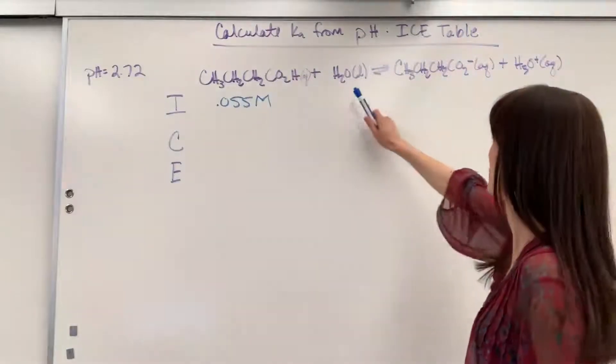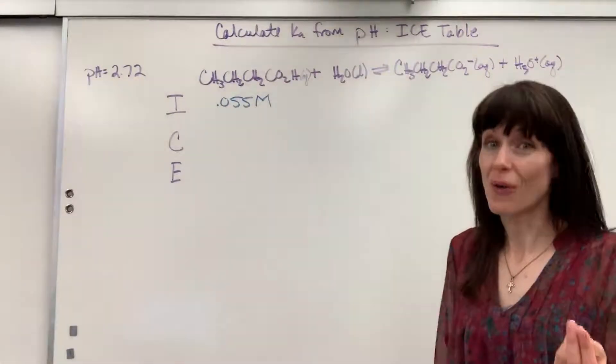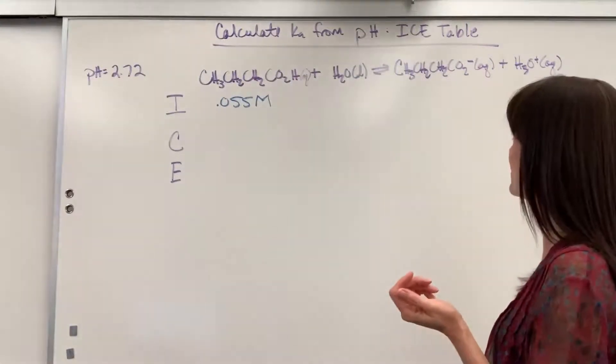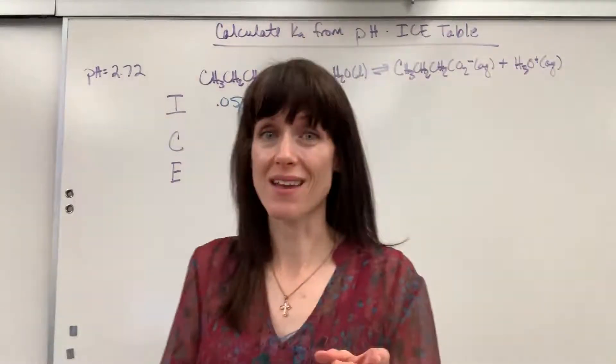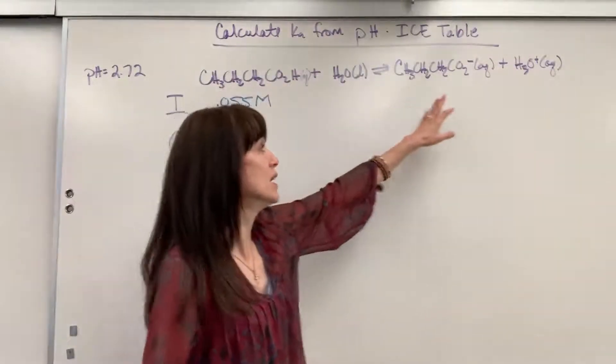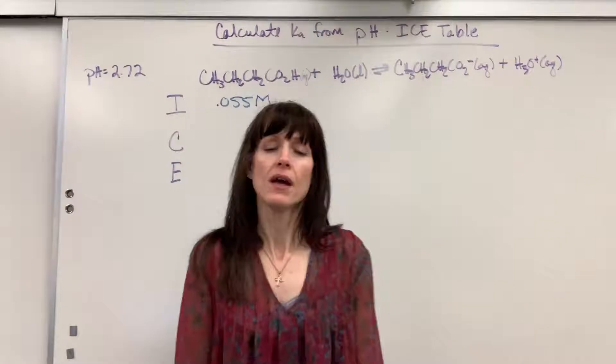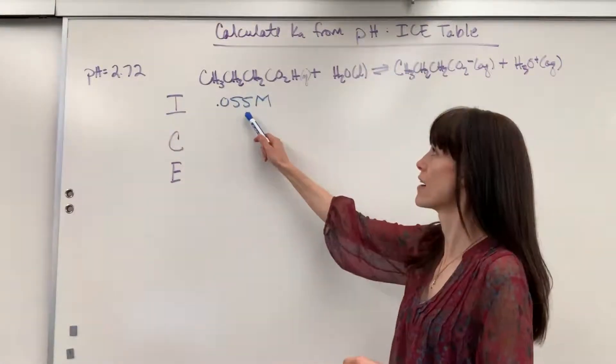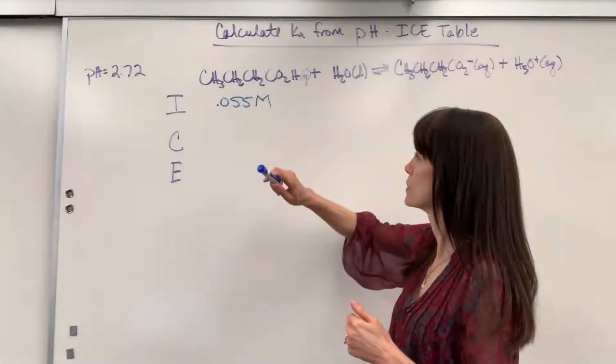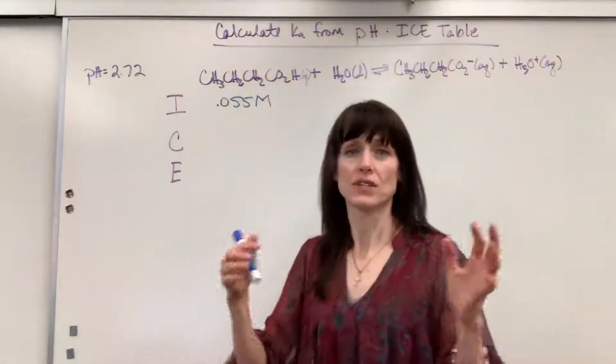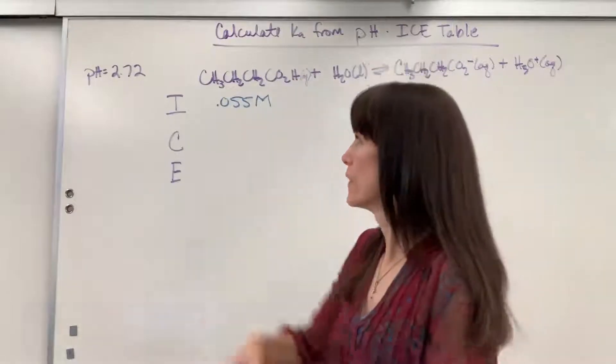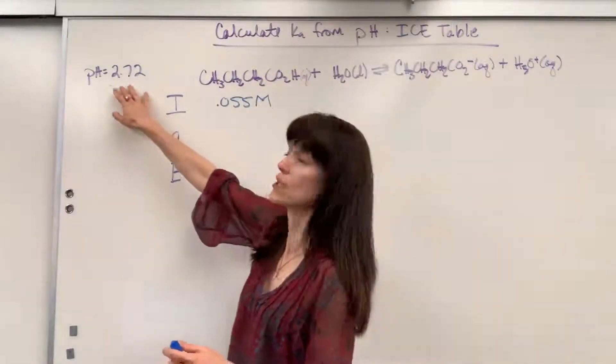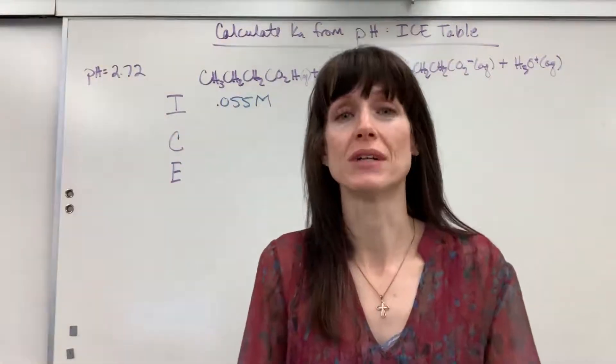This is butanoic acid is going to react with water to produce a butanoate. That's going to be the conjugate base, so it produces this ion, plus a hydronium ion. And this is the information that you're given, that you begin with a 0.05 molar concentration of butanoic acid and this reaction comes to equilibrium. They put a pH probe in the solution and the pH is 2.72.